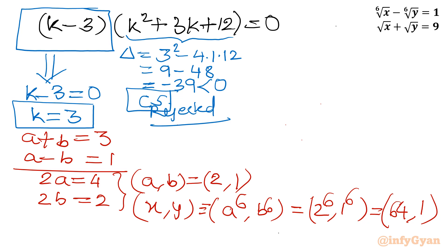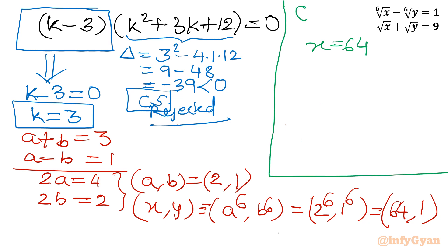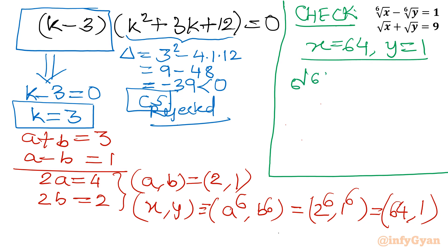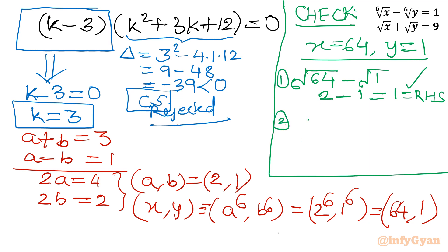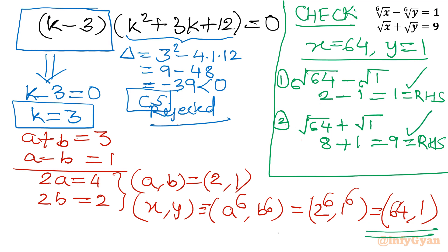Now let us cross-check our answers by substituting x equals 64 and y equals 1. For equation 1: the 6th root of 64 minus the 6th root of 1 equals 2 minus 1 equals 1, which matches our RHS — true. For equation 2: the square root of 64 plus the square root of 1 equals 8 plus 1 equals 9, which is also our RHS — true. So our ultimate and final answer is (64, 1).